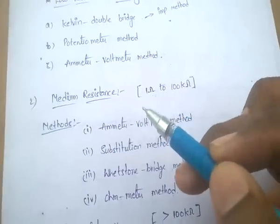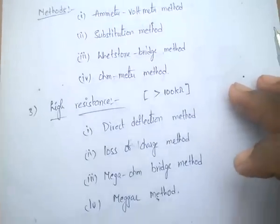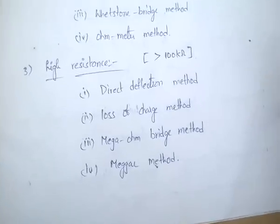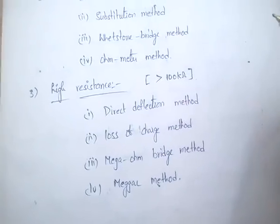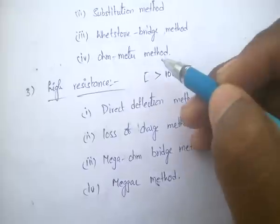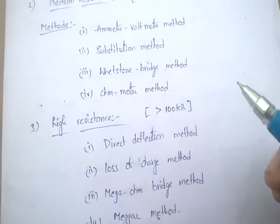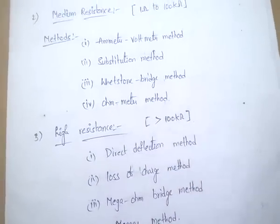Then it is called as medium resistance. Coming to high resistance — the value of resistance which is greater than 100 Kilo Ohms is then called high resistance.